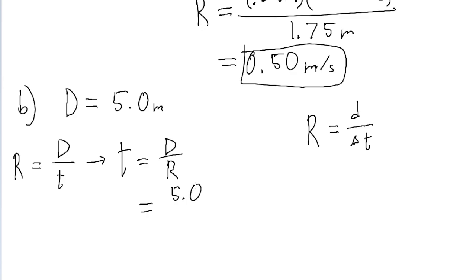And we know the big D, we know the depth, 5 meters, and we know the rate from part A, as 0.5 meters per second. So put this into a calculator, and we find a time interval of 10 seconds. And that is it for this problem.